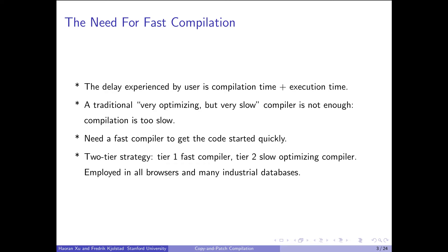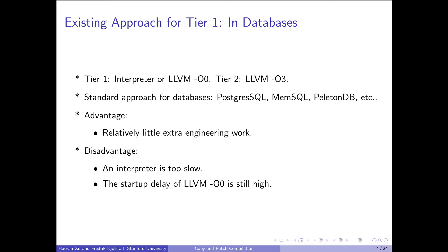That's why industrial databases and browsers employ a two-tier strategy: tier one is a fast compiler, and tier two is a slow optimizing compiler. For databases, the standard approach for tier one is either an interpreter or LLVM O0. The advantage is that the engineering work needed is small, since LLVM O0 does not require additional work — it's just changing an option flag — and the interpreter is needed for testing anyway. However, the disadvantage is clear: an interpreter is too slow at execution, and the startup delay of LLVM O0 is still very high, since LLVM is an optimizing compiler. So despite not coding the optimization passes, LLVM is still not designed to generate code that fast.